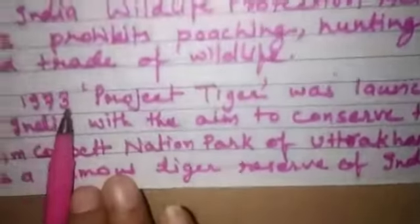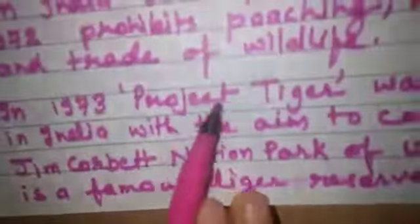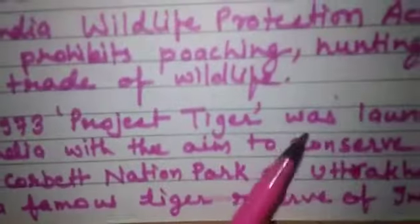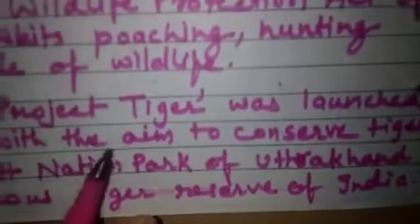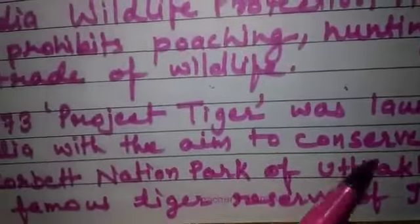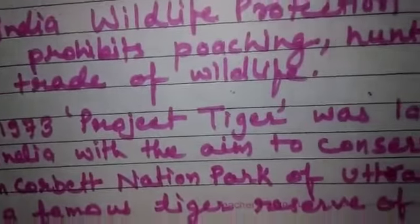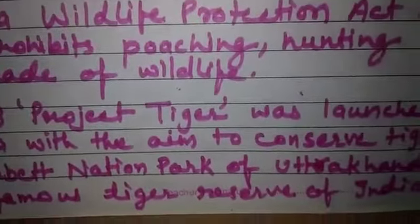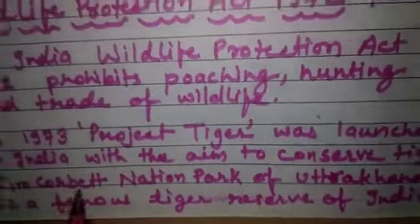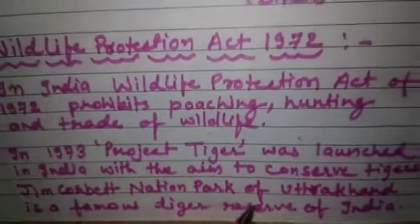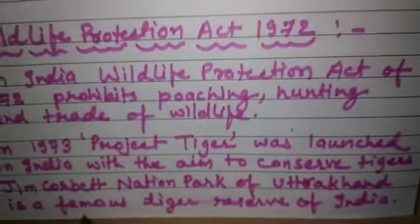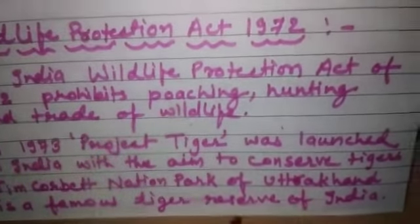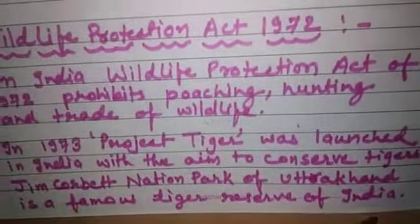In 1973, Project Tiger was launched in India with the aim to conserve tigers. Jim Corbett National Park of Uttarakhand is a famous tiger reserve of India.